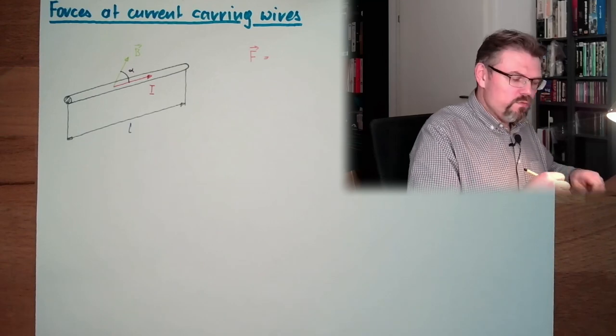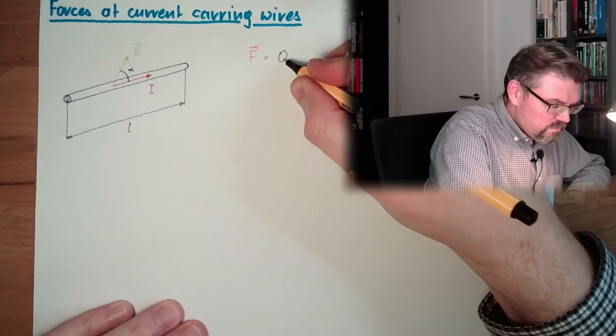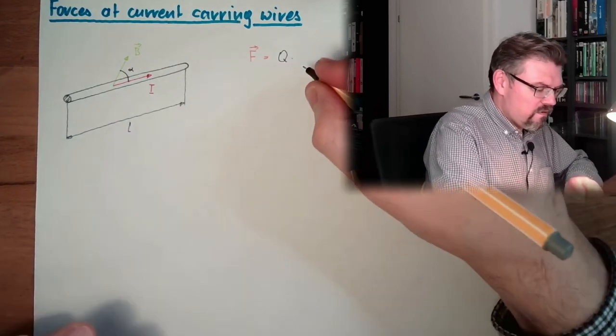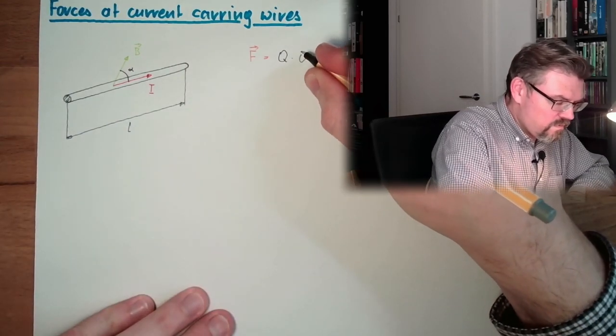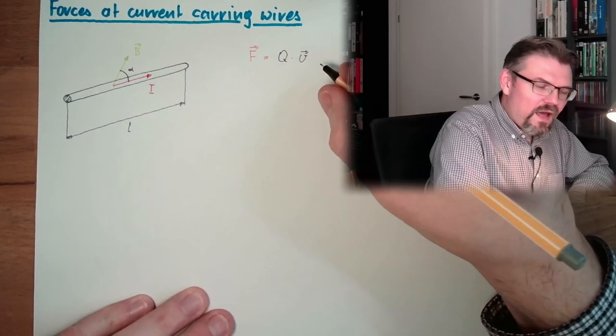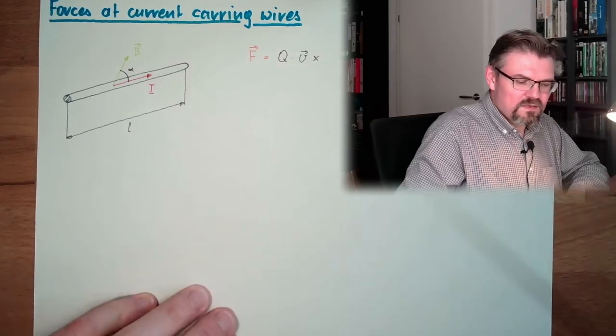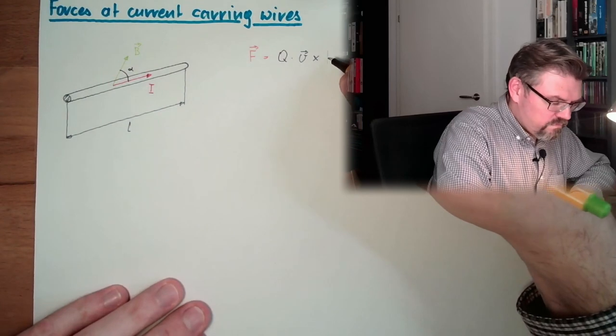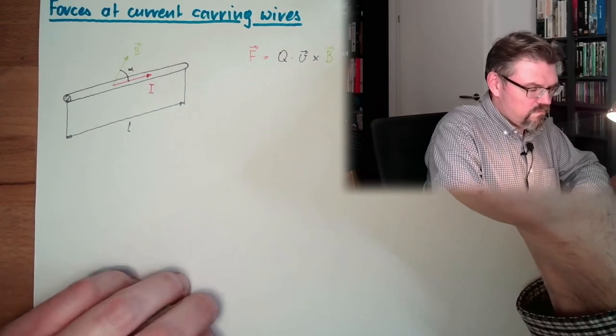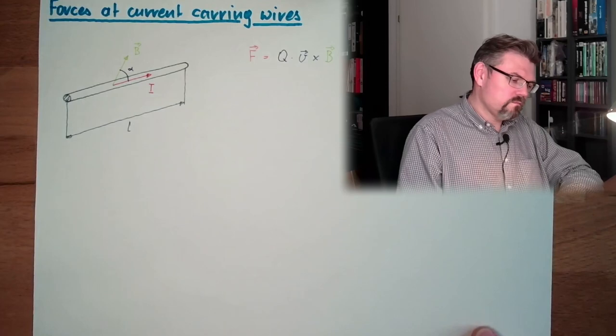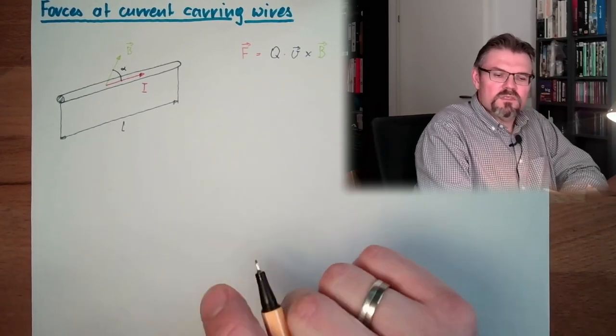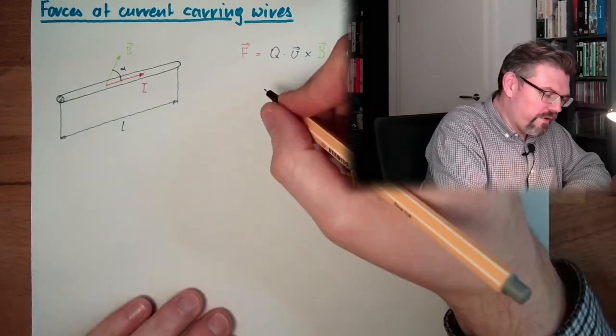That there is a charge q, multiplied by velocity, and then we had cross B. That was the Lorentz force. What's the name? Lorentz force.